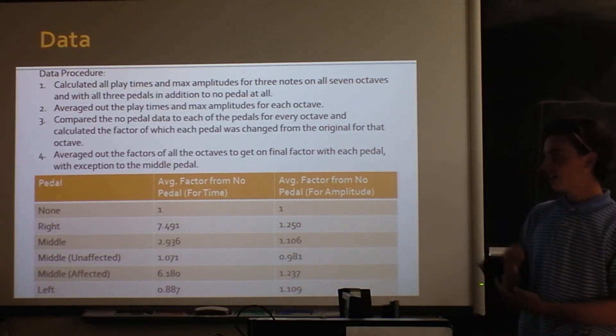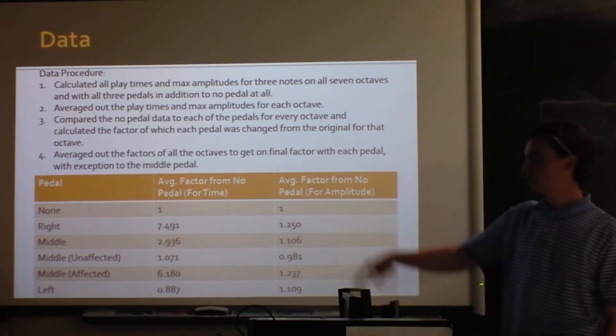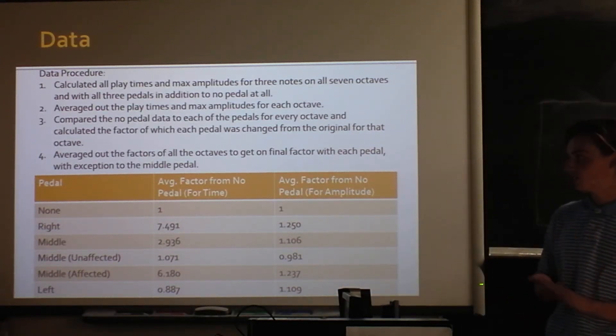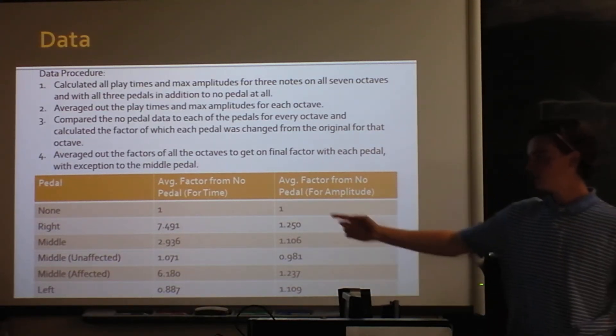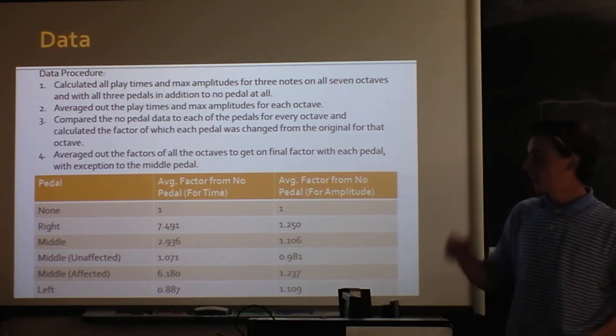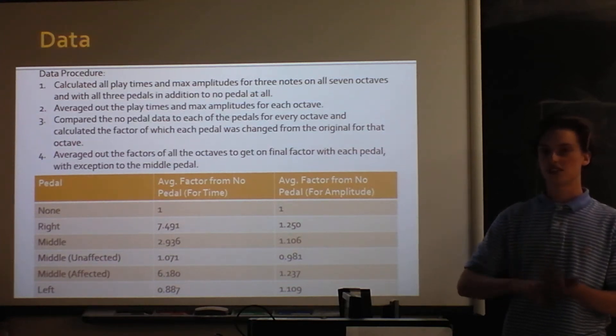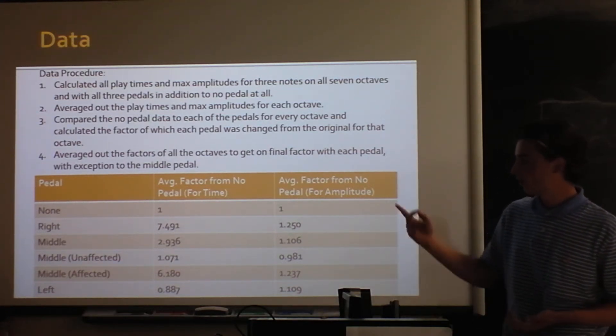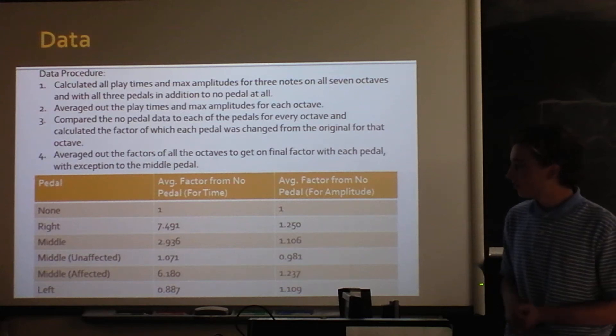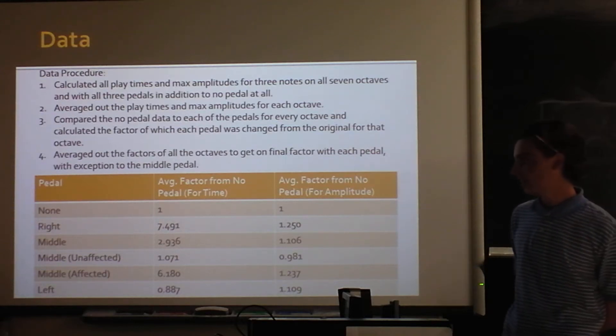So what I did is I calculated the average factor that the time change for each note from the original, so as you can see with no pedal, it's just one. And then I averaged them with the notes, and then averaged the octaves. So for the right pedal, on average, the time was increased by about, was about seven and a half times greater.